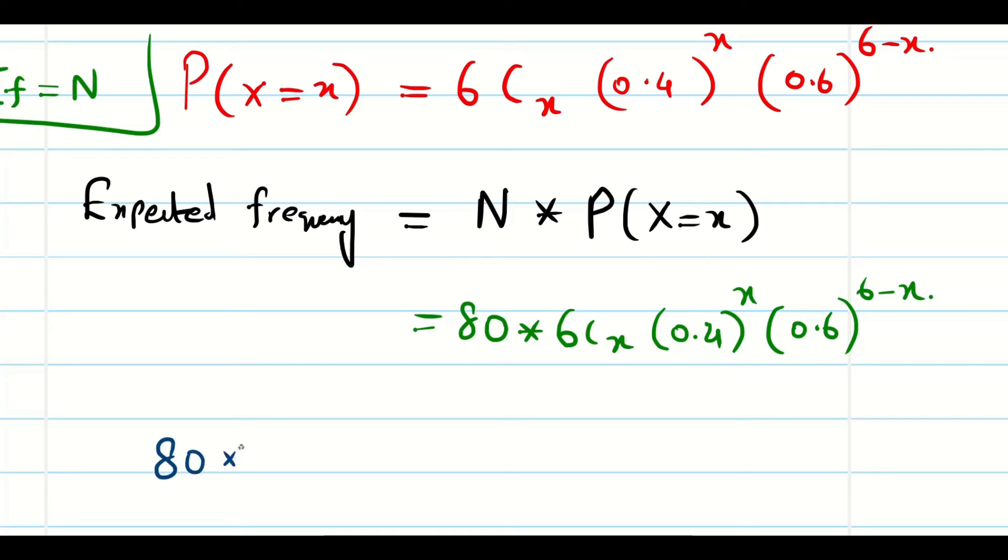Let us write 80 multiplication, so I am writing here like this: 6CX then 0.4 power X, 0.6 power... I said this is very very important. Whenever you write 6 minus X, you should have to put the bracket. Otherwise it will give error. Otherwise it will take a wrong value. I think now it is ready guys.